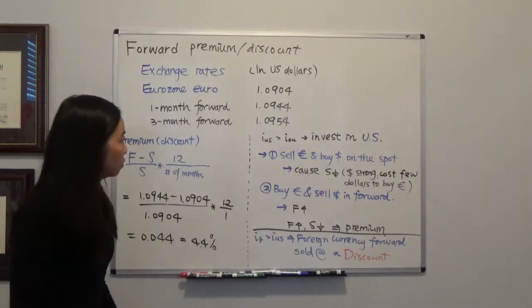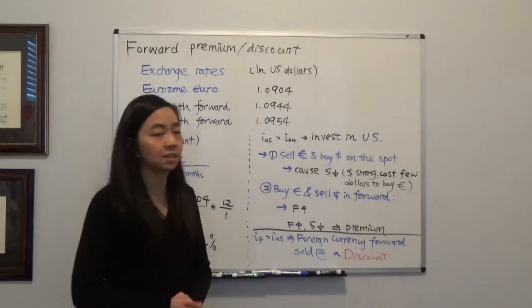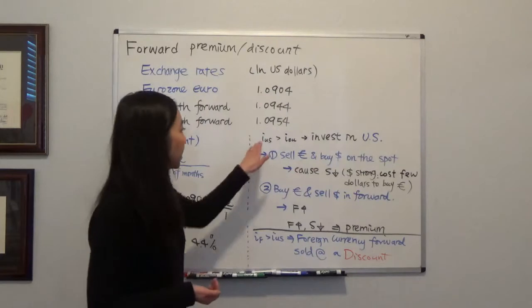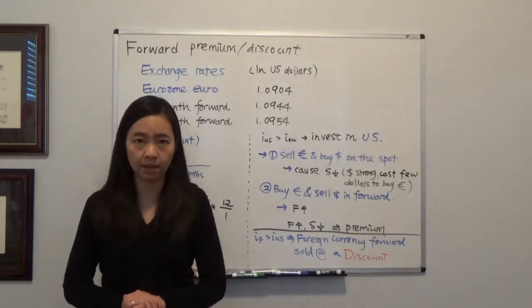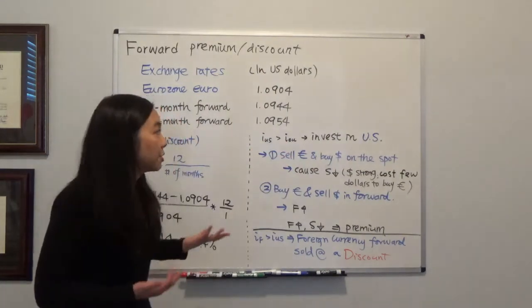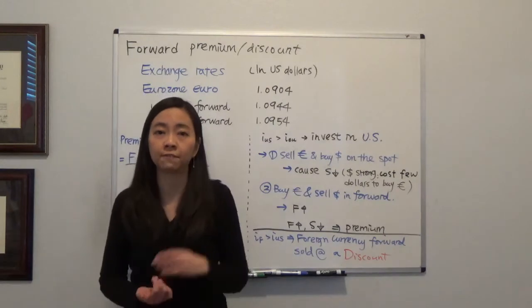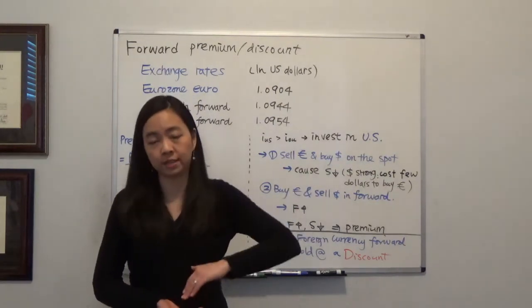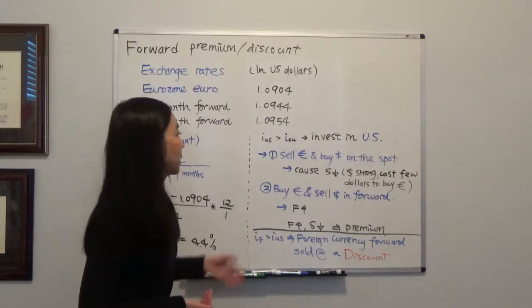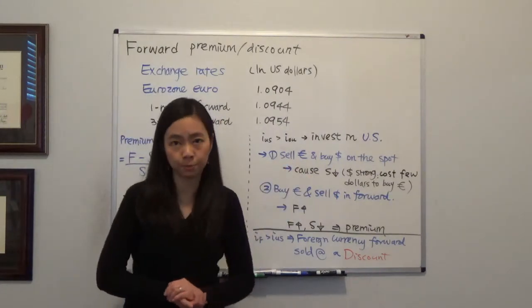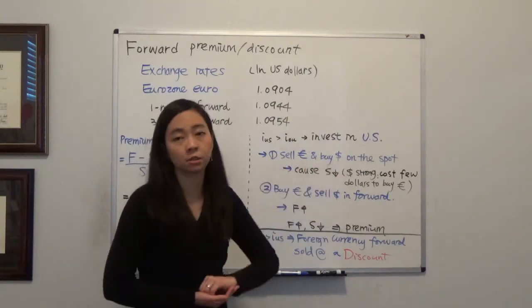Well chances are that's because the short run interest rate in the US is higher than the short run interest rate in Europe, and therefore that is going to induce investors from Europe to invest in the US. So what they will do is sell the euro on the spot and buy the dollar on the spot.